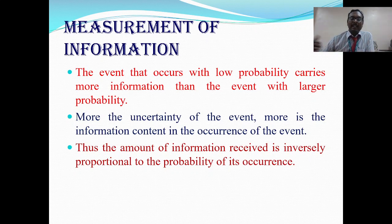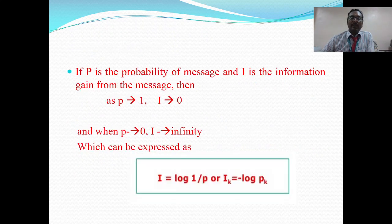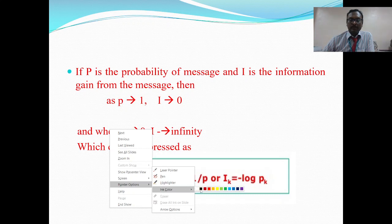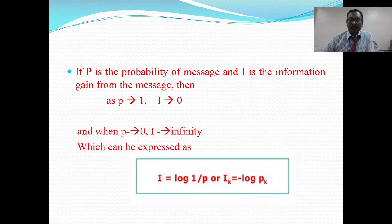High information means less probability, and low information means high probability. The amount of information received is inversely proportional to probability of occurrence. This can be formulated into an equation. Here, I is the information and P is the probability of the particular event. So, I is equal to log(1/P).